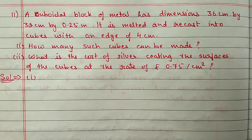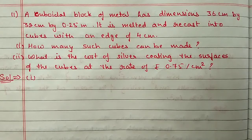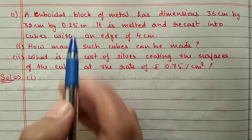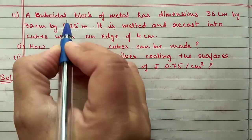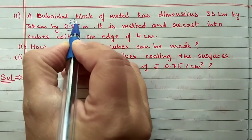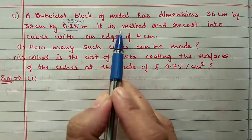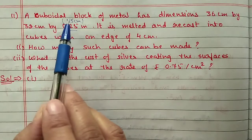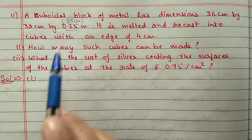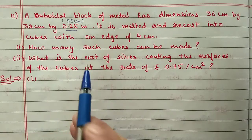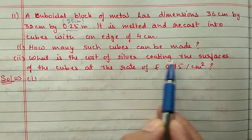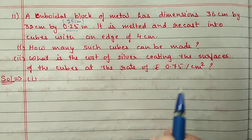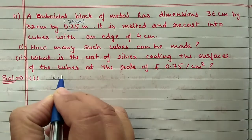Next, question number 11. A cuboidal block of metal has dimensions 36 cm by 32 cm by 0.25 m (which is 25 cm). It is melted and recast into cubes each of side 4 cm. First we have to find the number of such cubes, then find the cost of silver coating the surface of the cubes at the rate of 0.75 rupees per cm². Let the number of cubes be n.